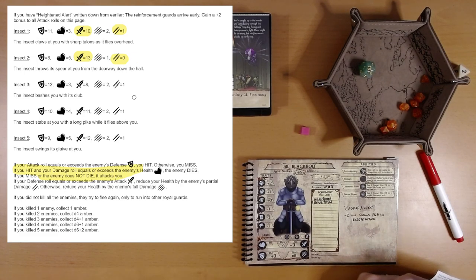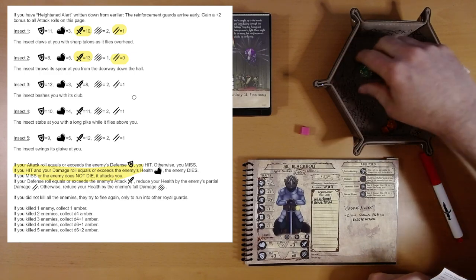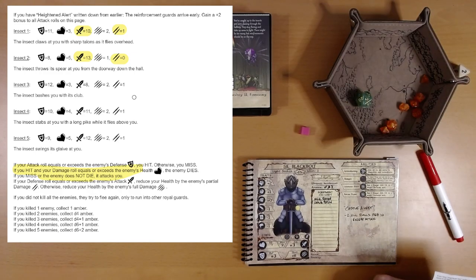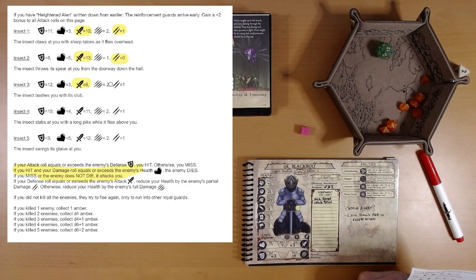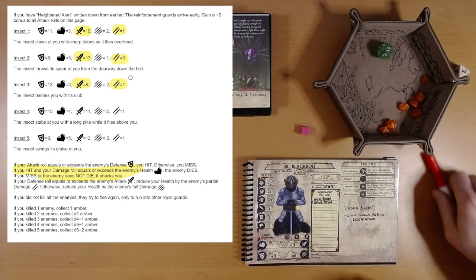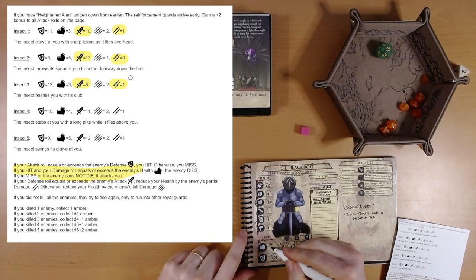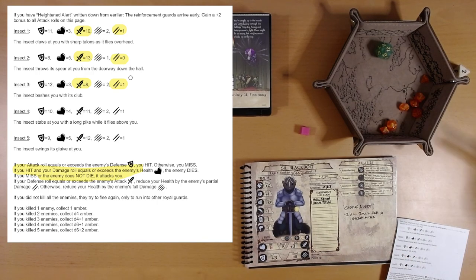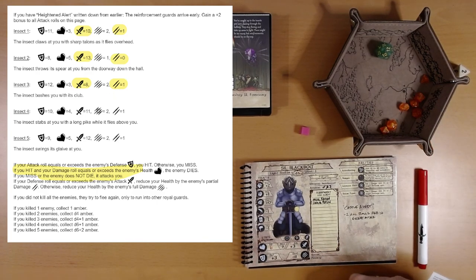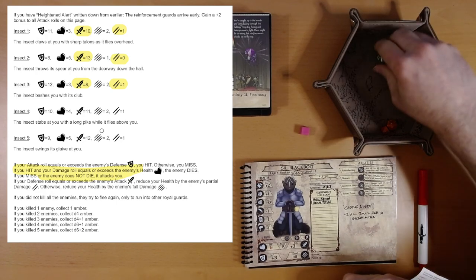Insect three. The insect bashes you with its club. We're going to roll a D20. That's our attack. And we fail miserably on that one. Its attack is eight. We need to roll a defense. Eight or better. And we easily hit that. But we take one point of damage. So we're down to six. I think we're going to be okay here. Even if we take the most damage we could, Syl will survive.